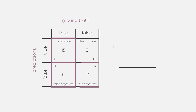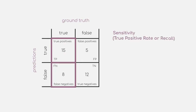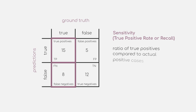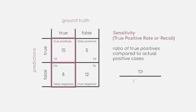Two other related metrics are sensitivity and specificity. Sensitivity is also known as true positive rate, or recall. With this metric, we want to look at the ratio of true positives compared to actual positive cases — in other words, how good our model is at identifying the disease. You simply divide the number of true positives by the number of actual positive cases, which can be further detailed as dividing true positives by the sum of true positives and false negatives.